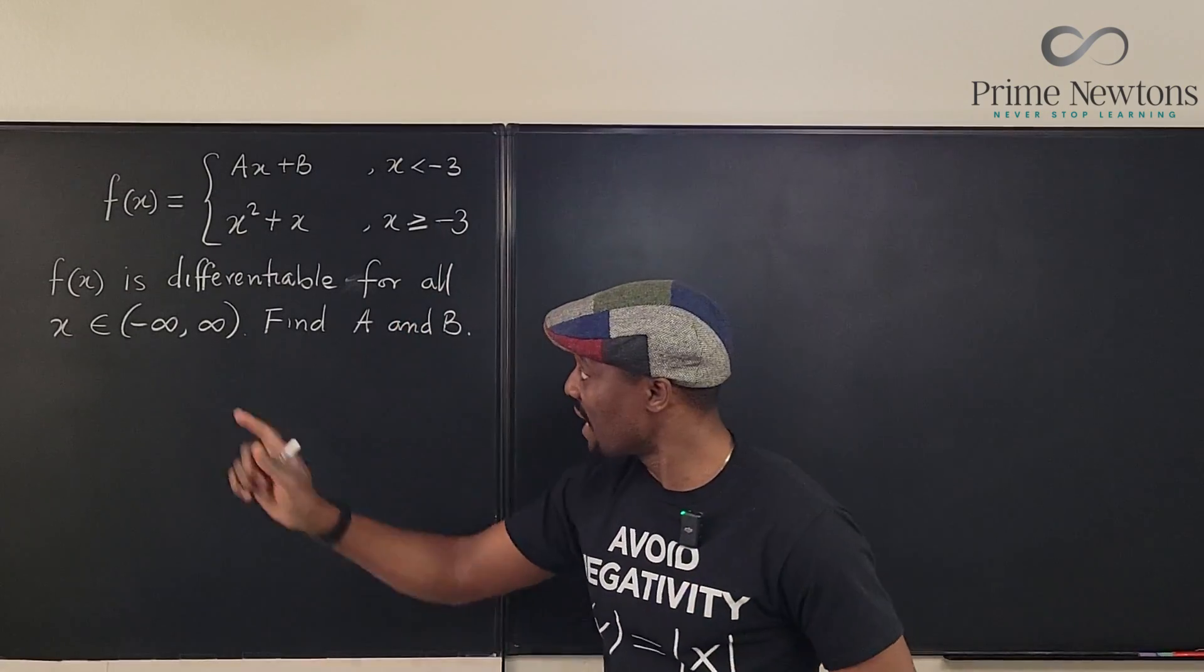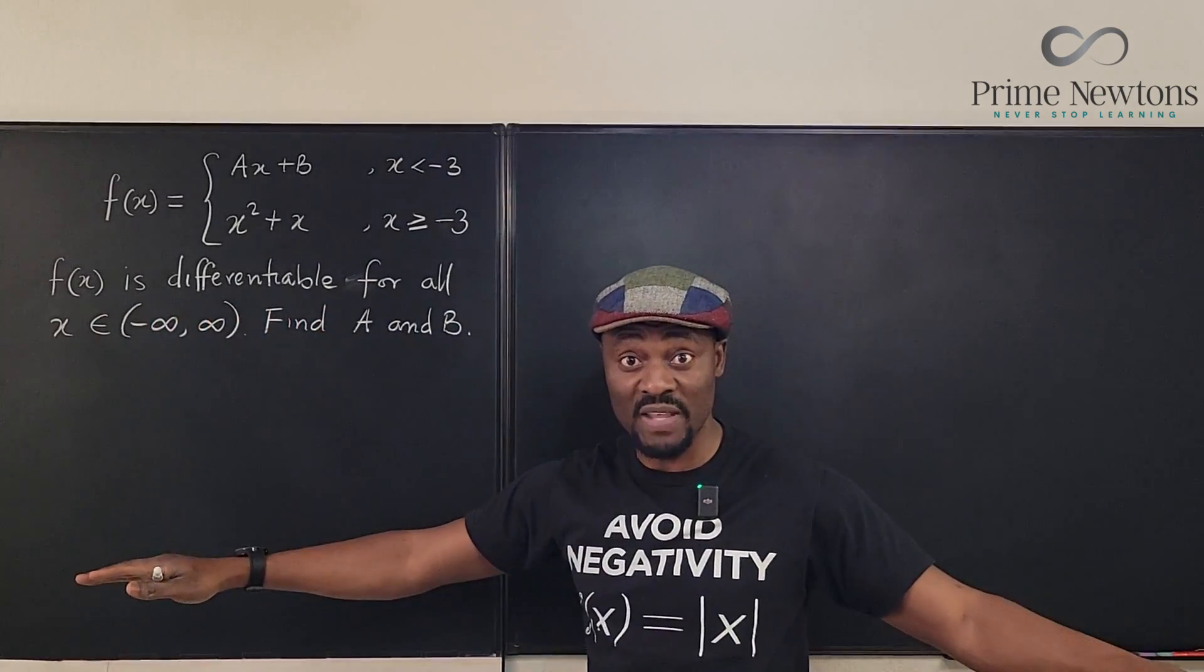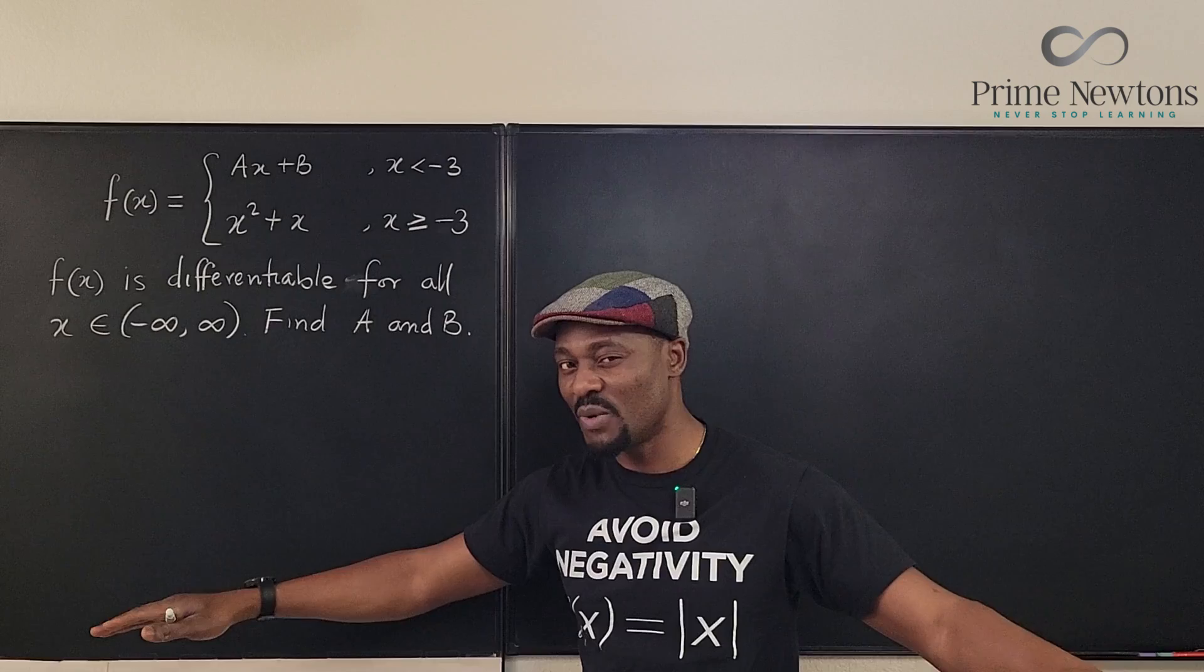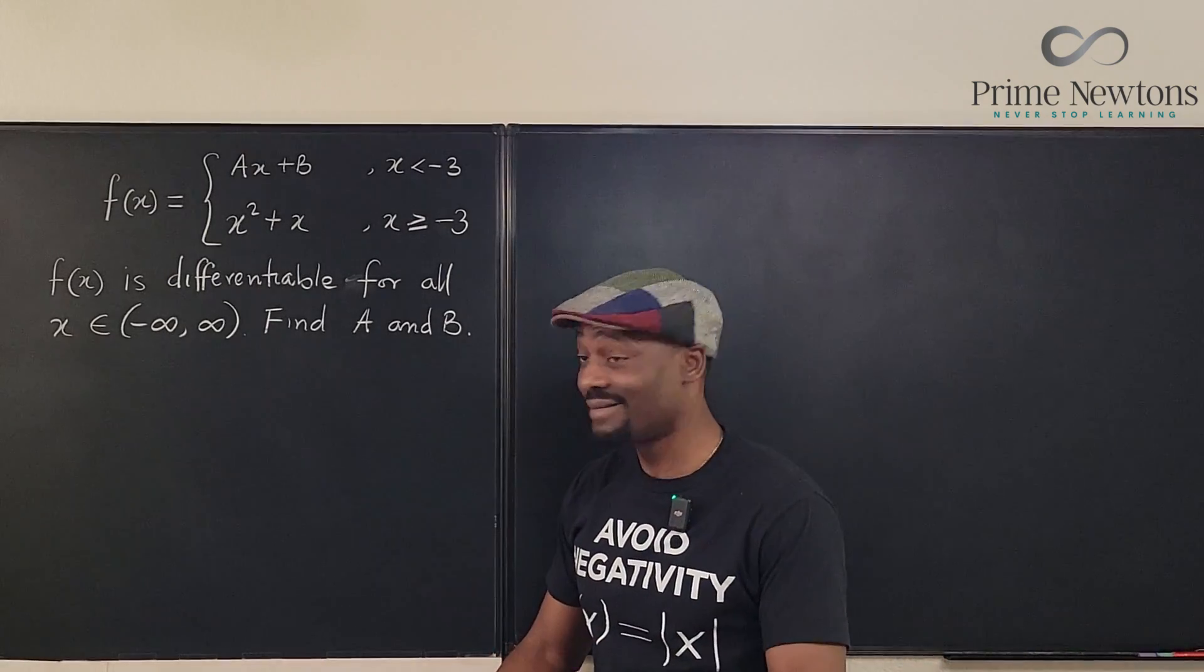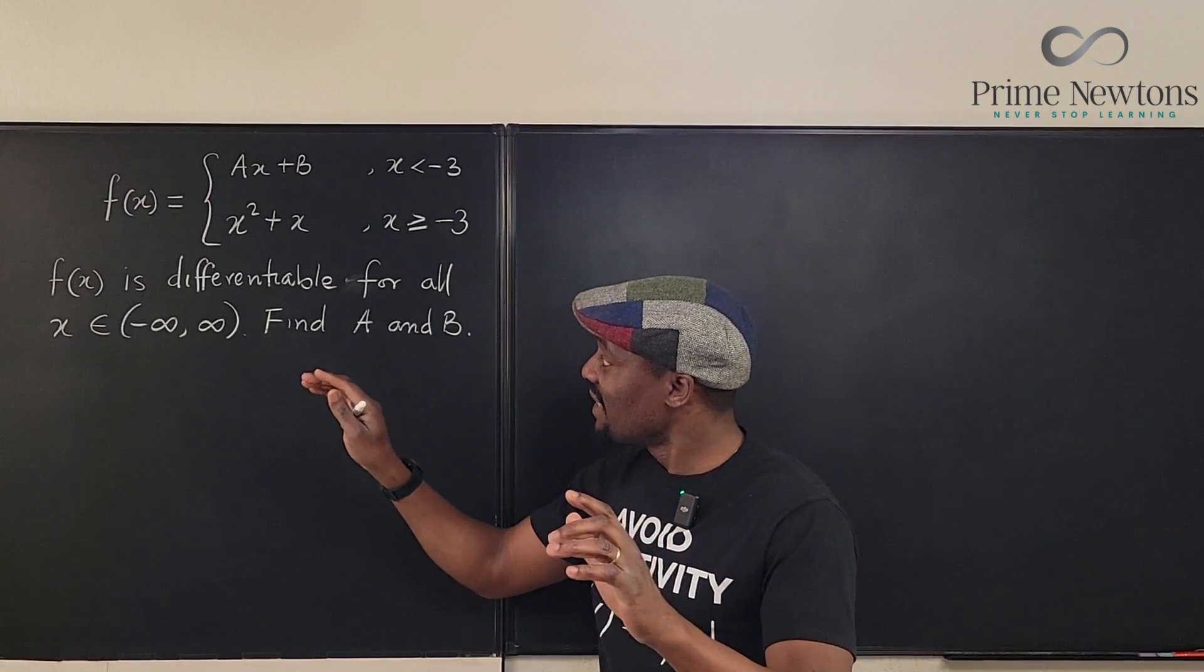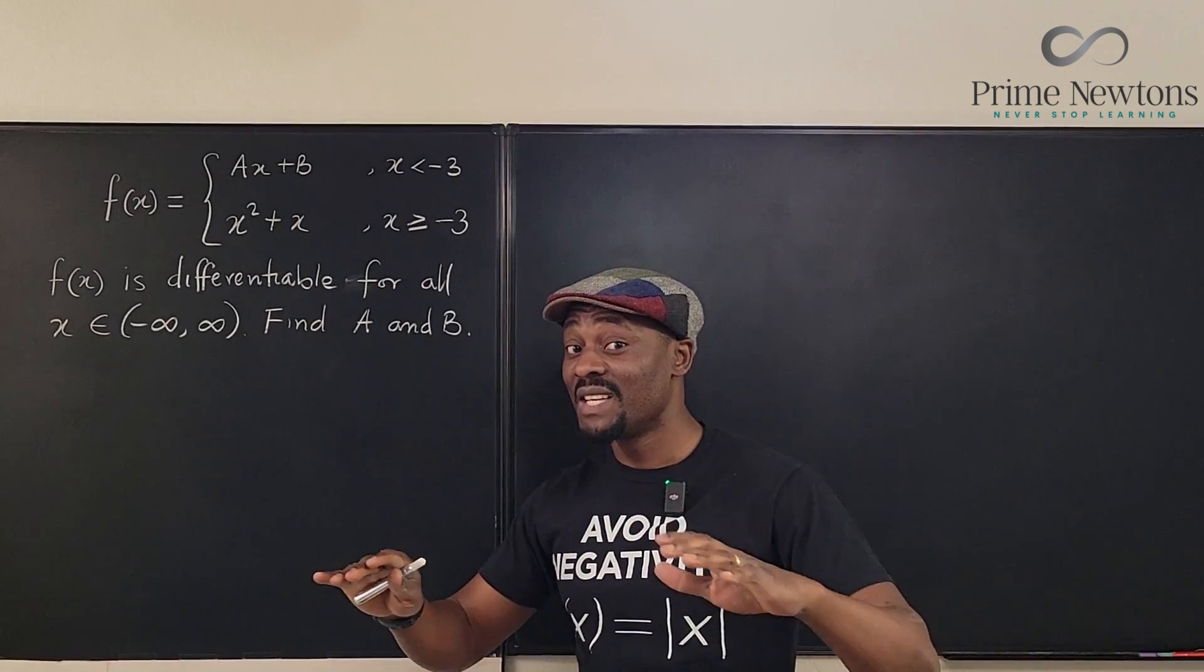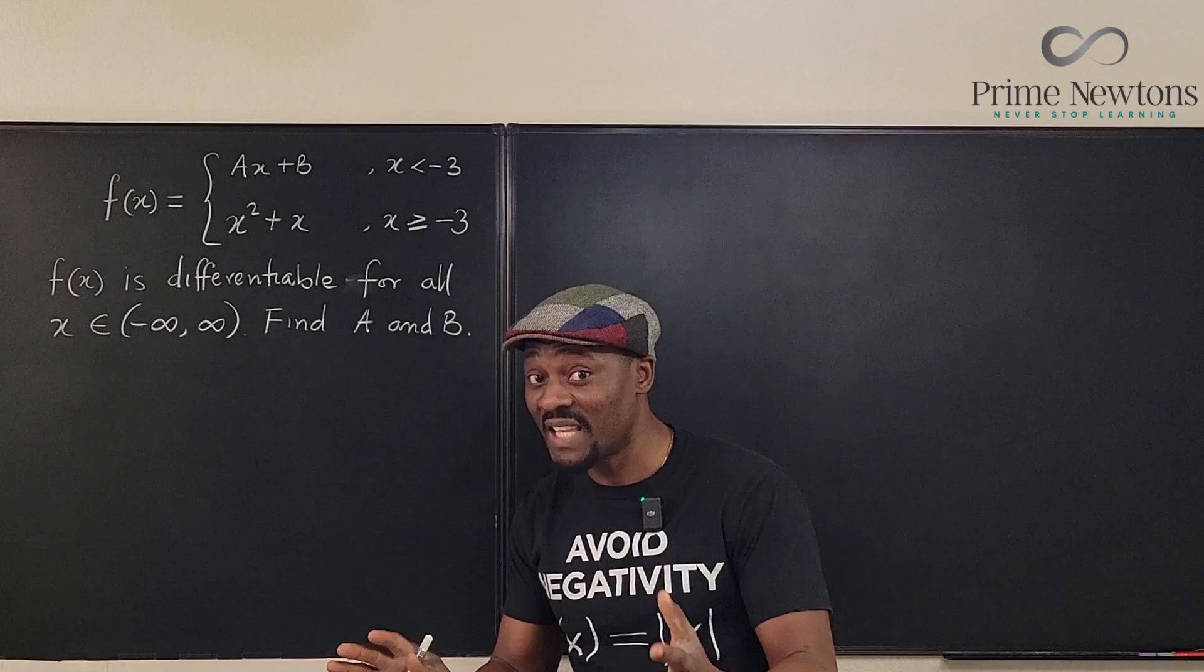And we've been told that this function can be differentiated everywhere on the x-axis. So what exactly would a and b be? Now, the fact that you were told that this function is differentiable everywhere, some extra information has been given away if only you can catch it.